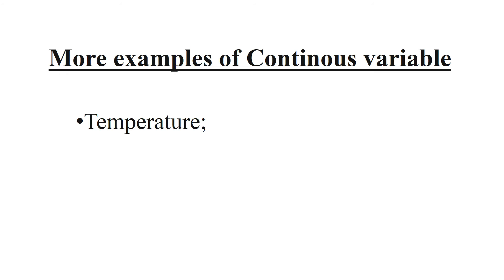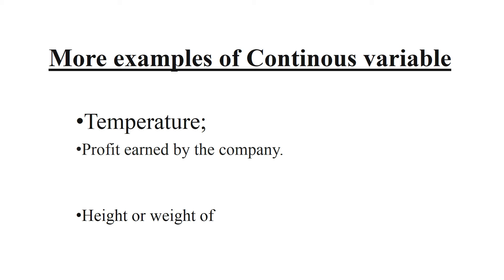More examples of continuous variables: temperature can be 2°C, 2.12°C, or 3.12°C. The profit earned by a company is not always a whole number — it can be a continuous figure. Similarly, the height or weight of a human body can be 5.2 feet or 60.58 kg — expressed in continuous, non-finite form.